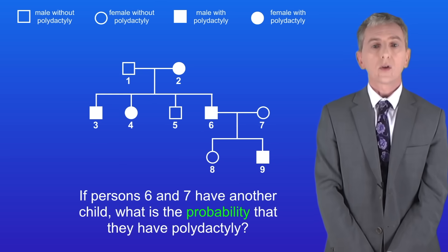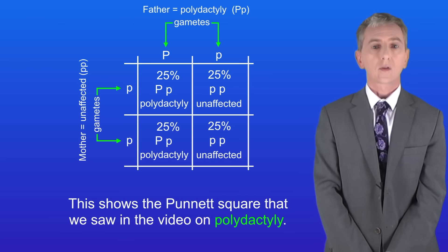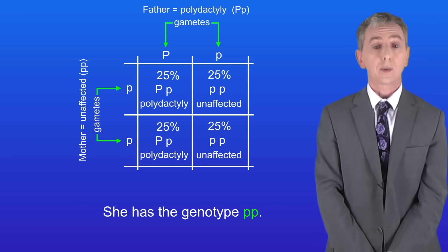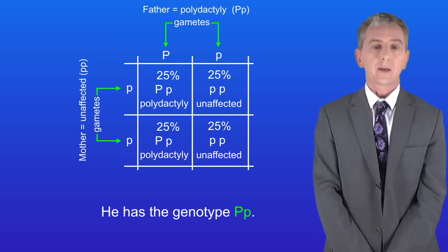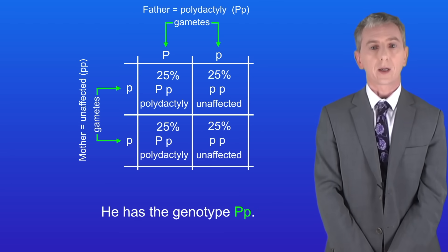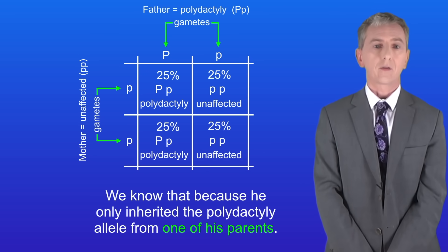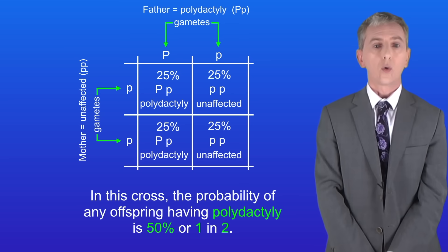Here's a second question: if persons 6 and 7 have another child, what's the probability that they have polydactyly? Here's the Punnett square we saw in the video on polydactyly. The mother is unaffected with the genotype lowercase p, lowercase p. The father has polydactyly with the genotype capital P, lowercase p — we know that because he only inherited the polydactyly allele from one of his parents. So the probability of any offspring having polydactyly is 50%, or 1 in 2.